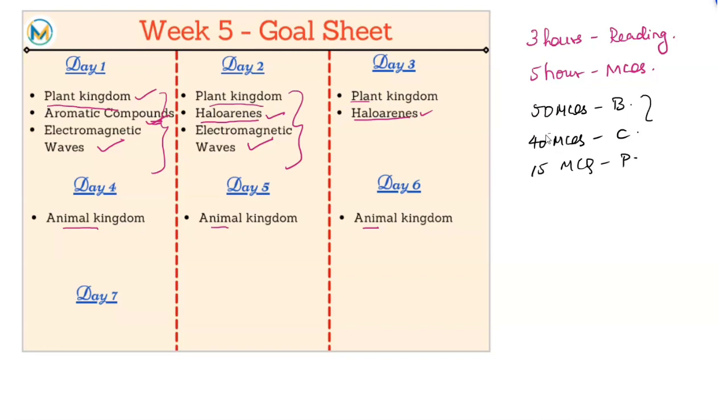This is what we will do on day one and day two. Now if you see in day three we just have two chapters or just two sections to do. So in day three we will do 50 MCQs of bio, we will do 40 MCQs of chem. So this is for the MCQ part.